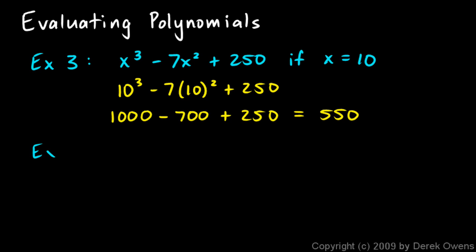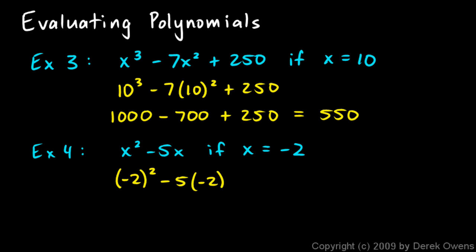Example 4 is x squared minus 5x, if x equals negative 2. We rewrite the polynomial using negative 2 for x: negative 2 squared minus 5 times negative 2. Negative 2 squared is positive 4. Then minus 5 times negative 2 — those two minus signs give a positive number — negative 5 times negative 2 is positive 10. So this is 4 plus 10, which equals 14.